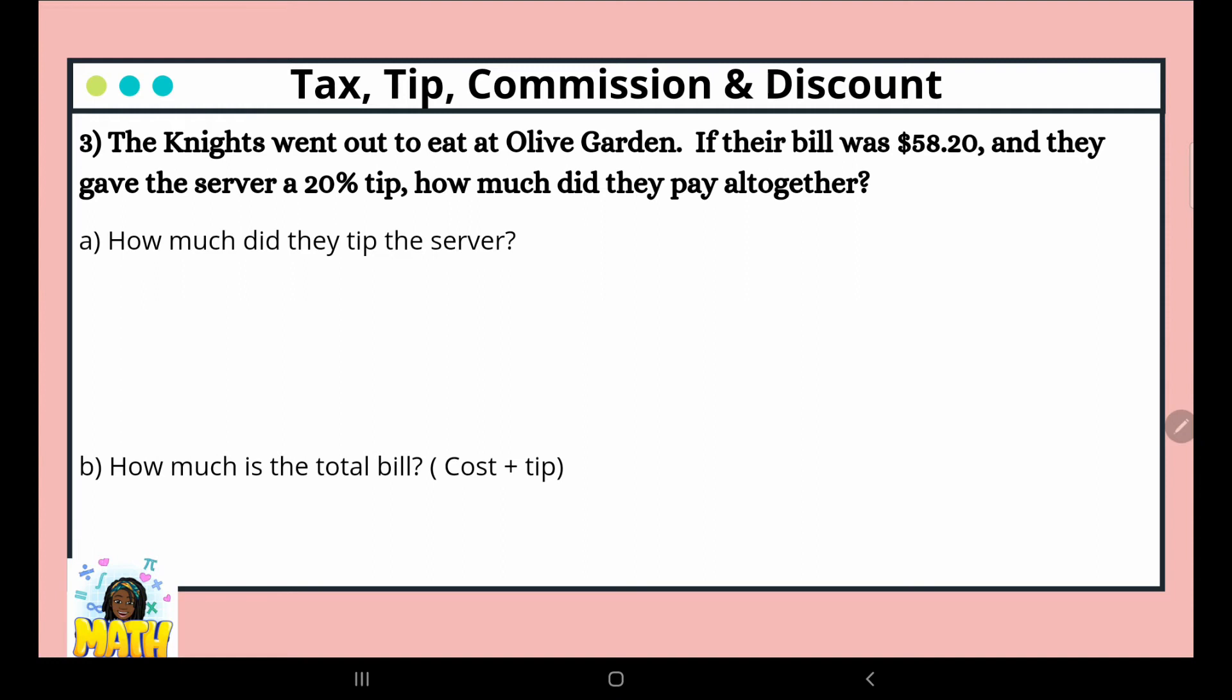The Knights went out to eat at Olive Garden. If their bill was $58.20 and they gave the server a 20% tip, how much did they pay all together? So we'll start with our percent proportion: part over whole equals percent over 100. The total bill was $58.20, so that's our whole. And they're giving a 20% tip. Therefore, I'm looking for my part. So x over $58.20 equals 20 over 100.